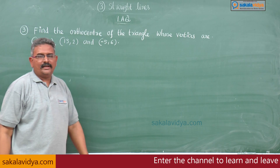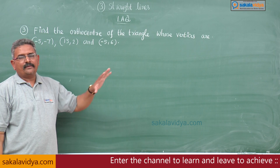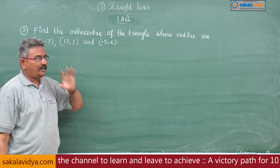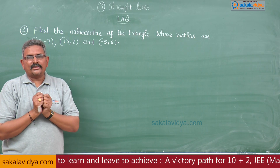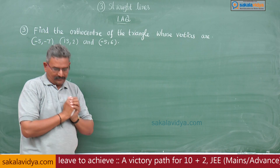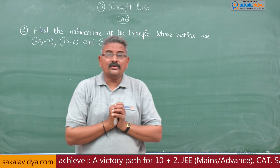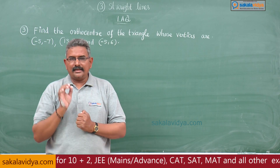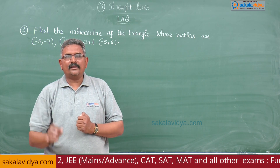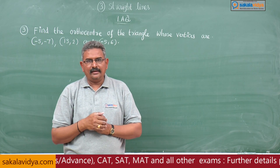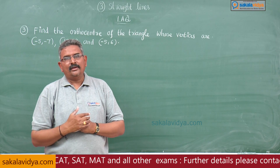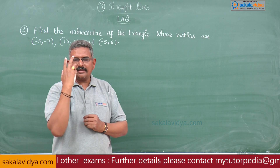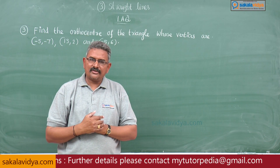This is also a very important problem for 7 marks. The key word here is orthocenter. The orthocenter of a triangle is one of the centers of the triangle — it is the point of concurrence of the altitudes. That means we have to find out two equations of two altitudes. If we solve them, we get the orthocenter.